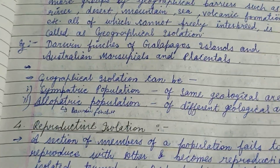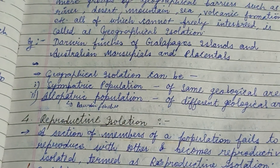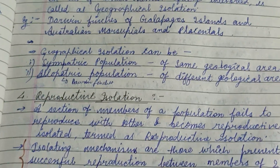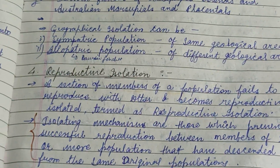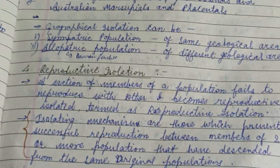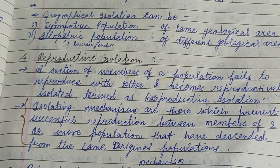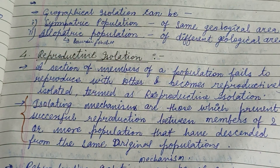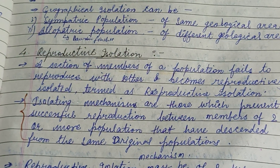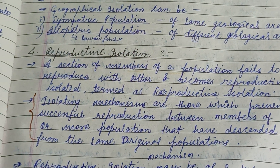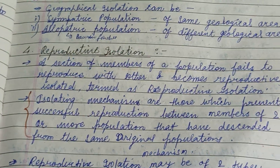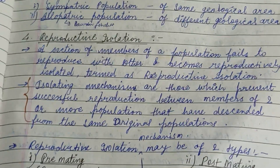Examples are the Darwin's finches of the Galapagos Islands, Australian marsupials, and the placental mammals. Geographical isolation can occur in sympatric or allopatric populations.